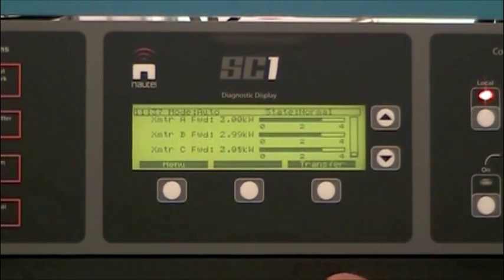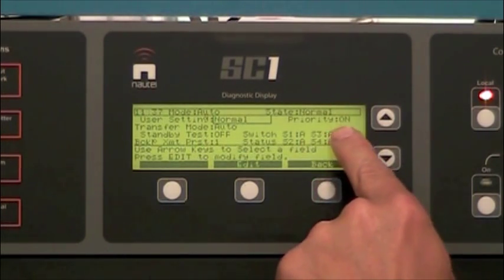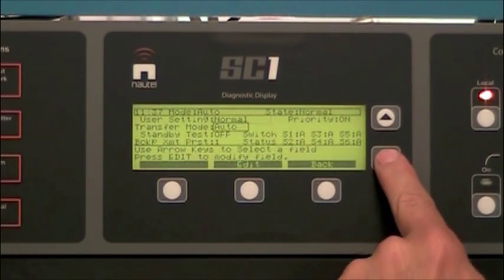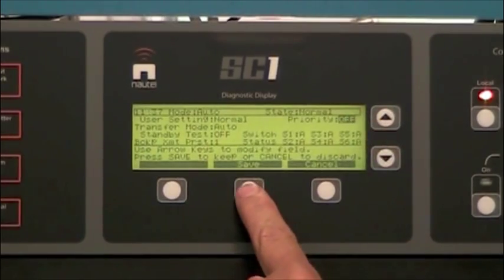Go back to the top menu again. And we check to make sure our priority selection is turned on because it is an option. So at transfer we see priority is on. If we wish to turn that off very simply scroll down to that position. Edit. Turn it off. And save.